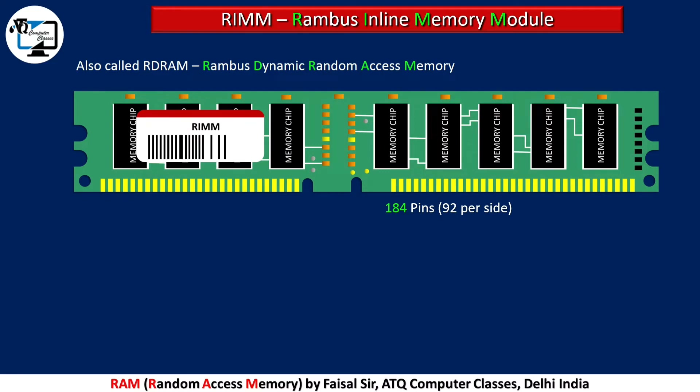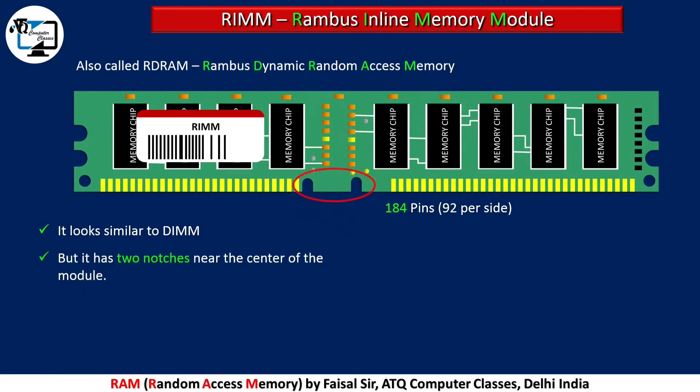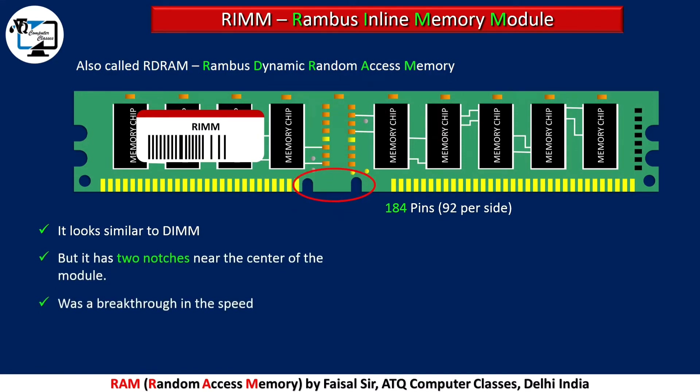RDRAM stands for Rambus Dynamic Random Access Memory. It has 184 pins, with 92 pins per side. It looks similar to a DIMM but has two notches near the center of the module. It was a breakthrough in speed.